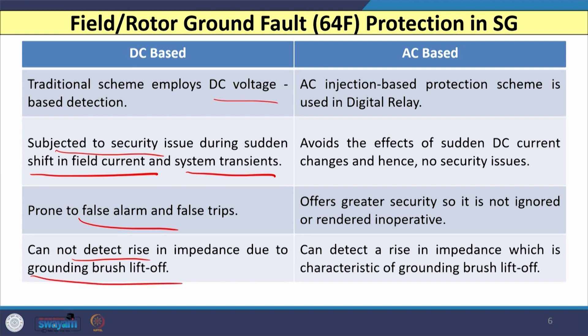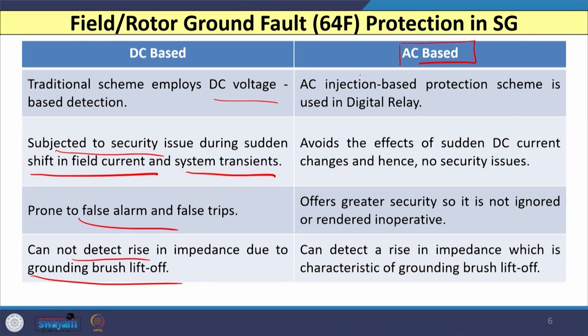The DC voltage-based detection scheme may fail to detect any increase in impedance due to grounding brush lift-off. Because of these disadvantages, most utilities now use AC voltage-based protection schemes, as used in most digital relays. This scheme avoids the effect of sudden changes in DC current, offers greater security during system transients, and can detect increase in impedance particularly in case of grounding brush lift-off.